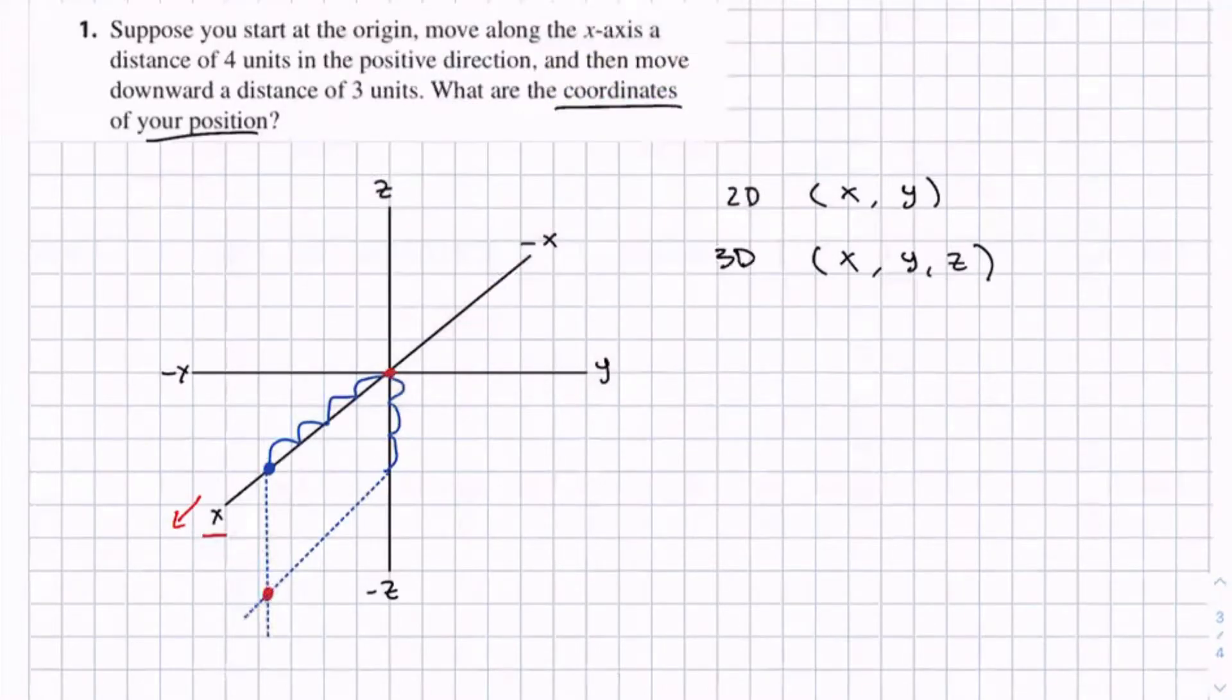So here's our point. We need to find the coordinates of the position. Since we started with the x, since x is the first one, we can start with the x. And we moved 4 units in the positive direction, which corresponds to 4.